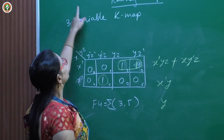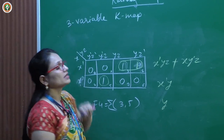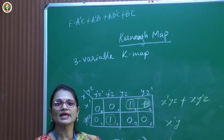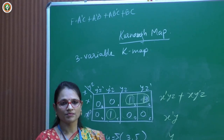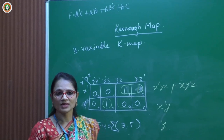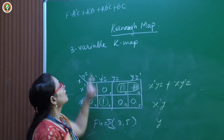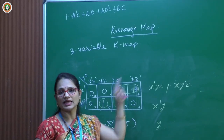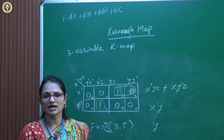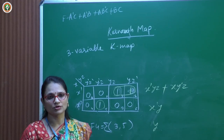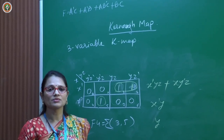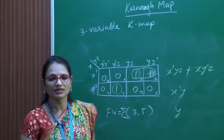When an equation is not written in SOP standard canonical format, we first need to convert it into standard format, then draw the K-map and simplify. That we are going to look into in the next class. Thank you.